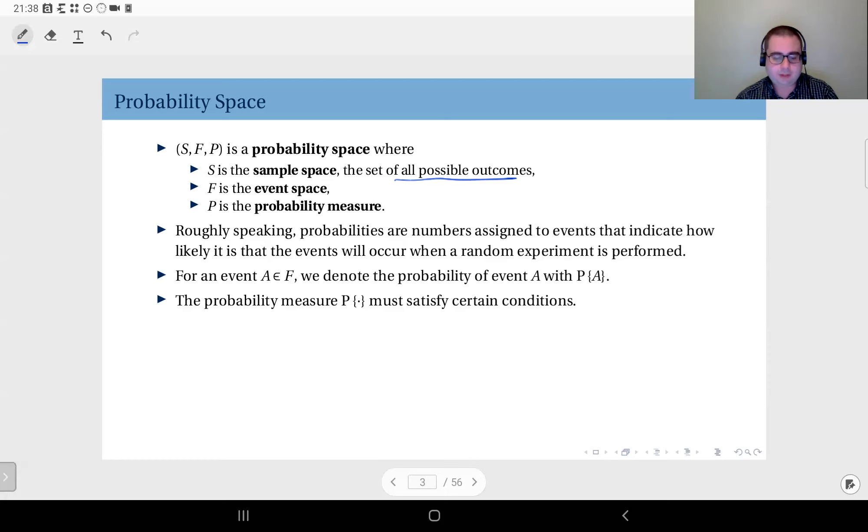Finally, P represents the probability measure. This is a function that assigns numerical values, so probabilities are numbers assigned to events that indicate how likely it is that the events will occur when the random experiment is performed. The probability measure assigns a numerical value, which we call the probability, to an event.